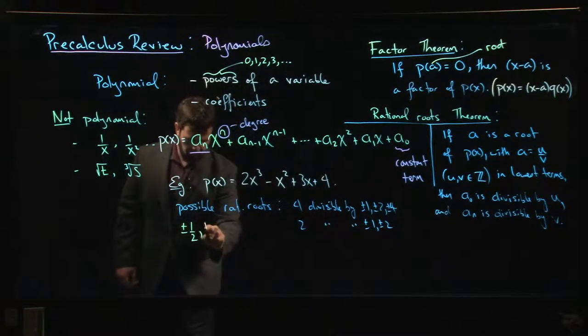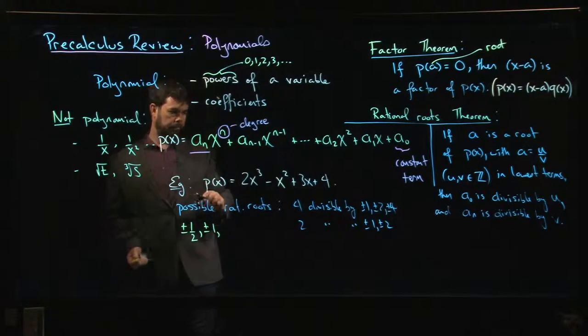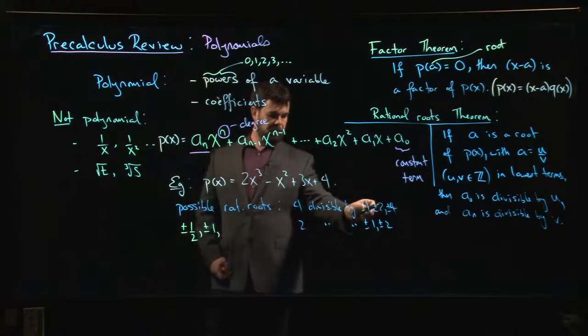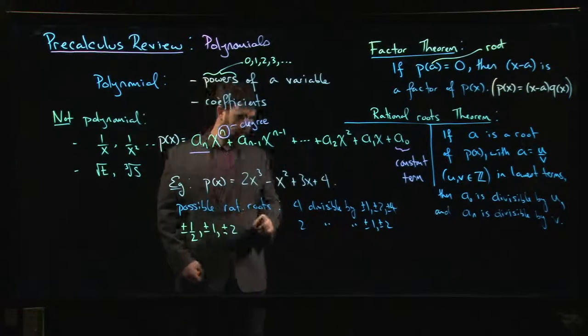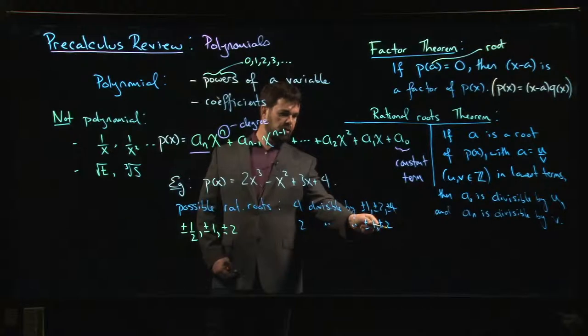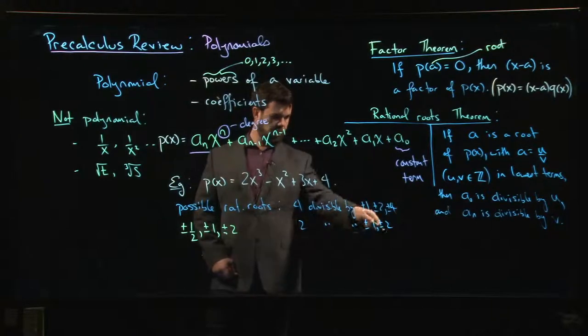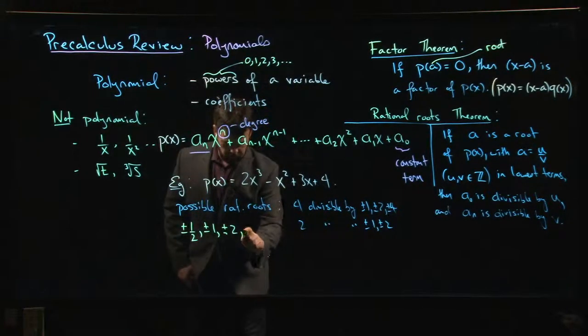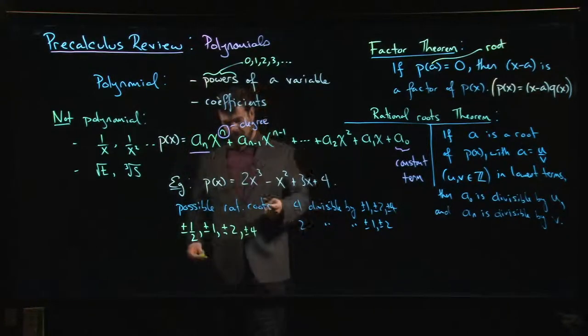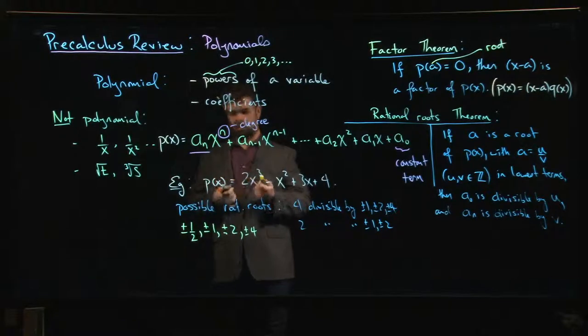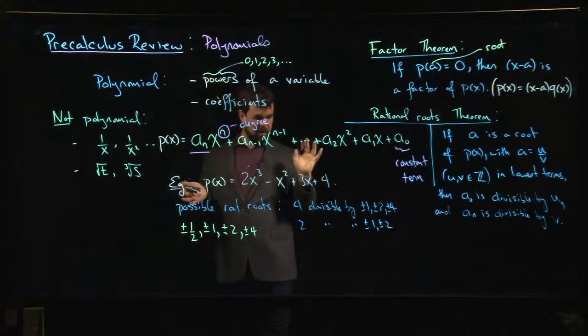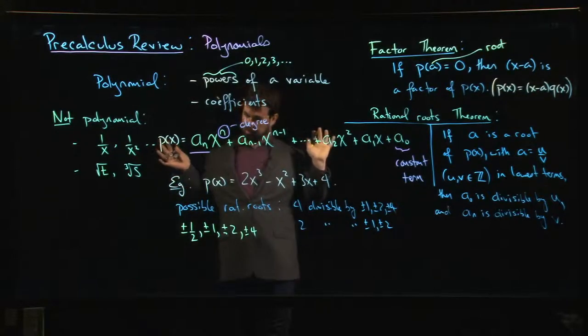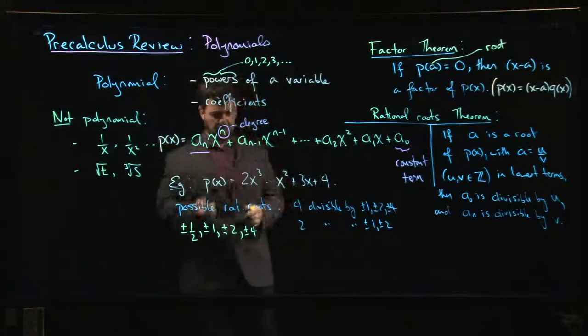I could do ±2 over ±1, so that would be ±2. If I do 2/2 that gives me 1, already got it. 4/2 gives me 2, already got it. So the other options would be ±4. So that's a total of eight numbers to consider, which is still a fair amount of work, but it's better than just randomly guessing. At least you've narrowed it down to eight possibilities.